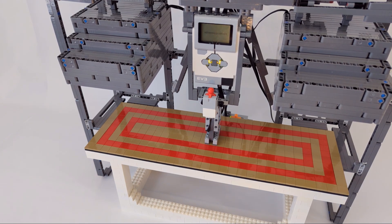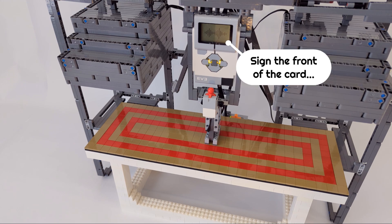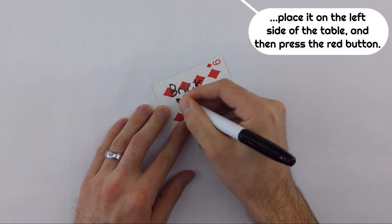Excellent choice. For this trick, I'm going to make your card teleport across the table. Sign the front of the card, place it on the left side of the table, and then press the red button.